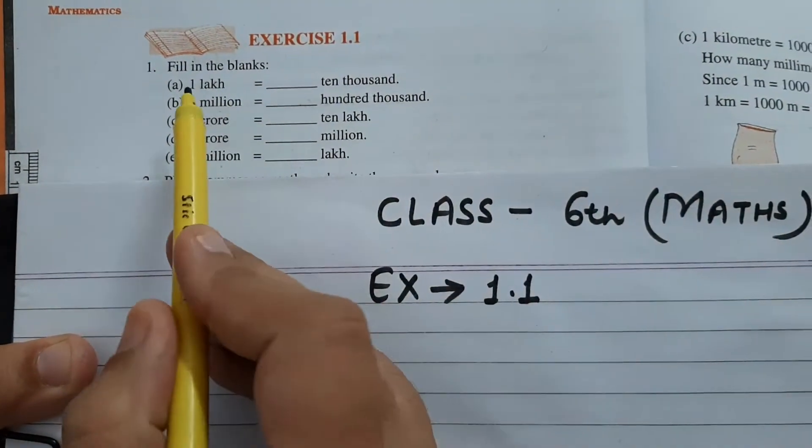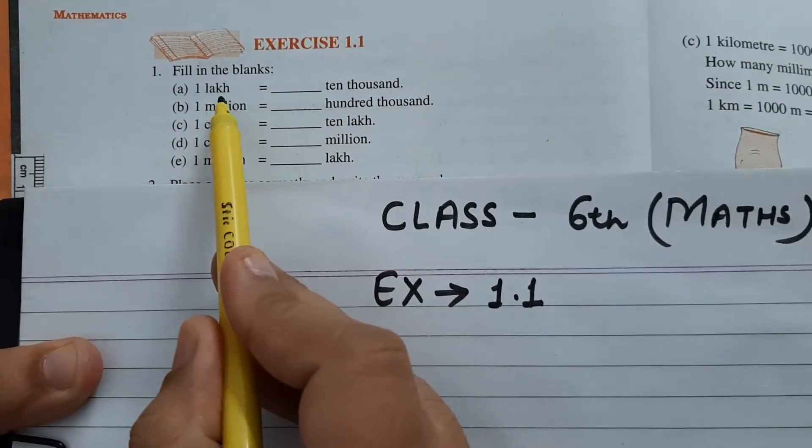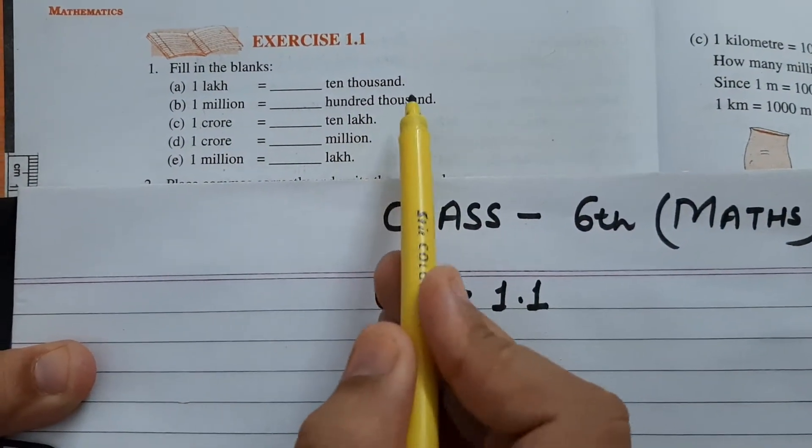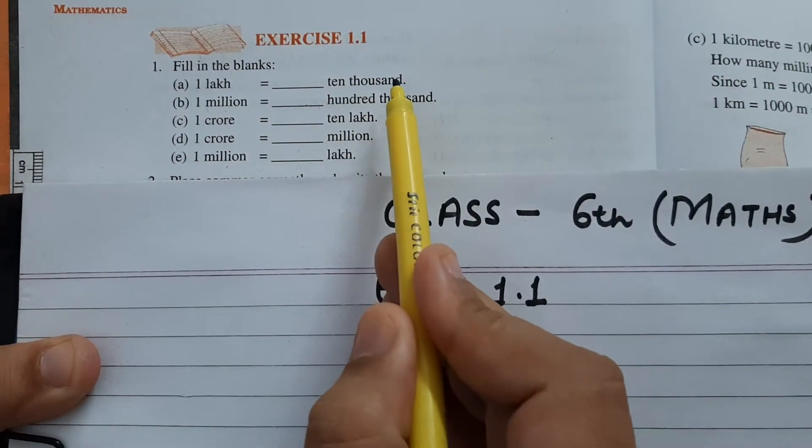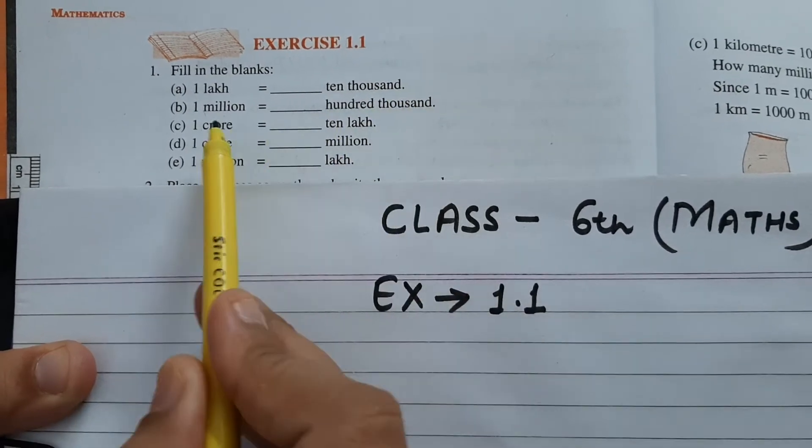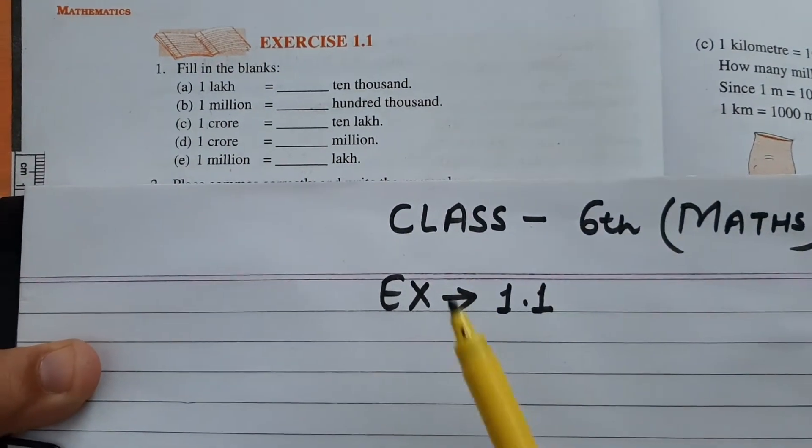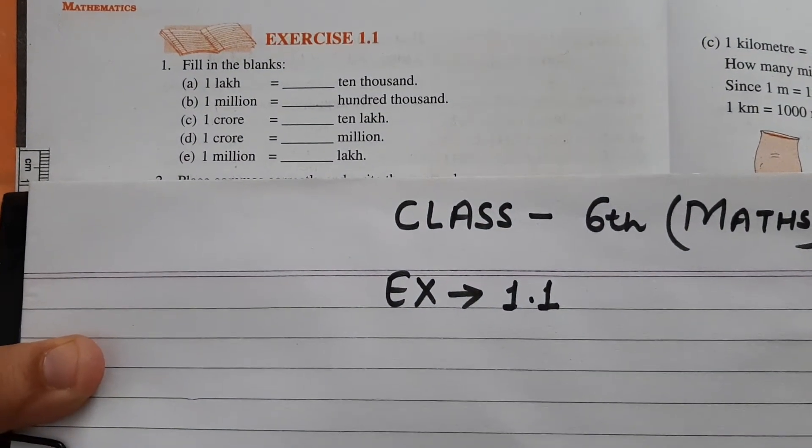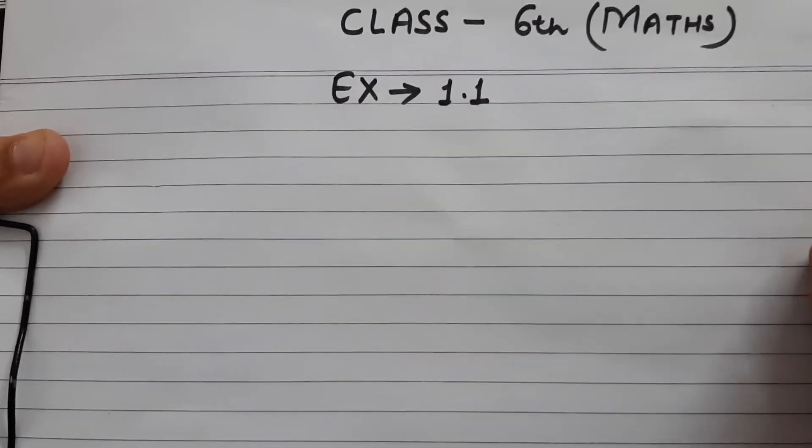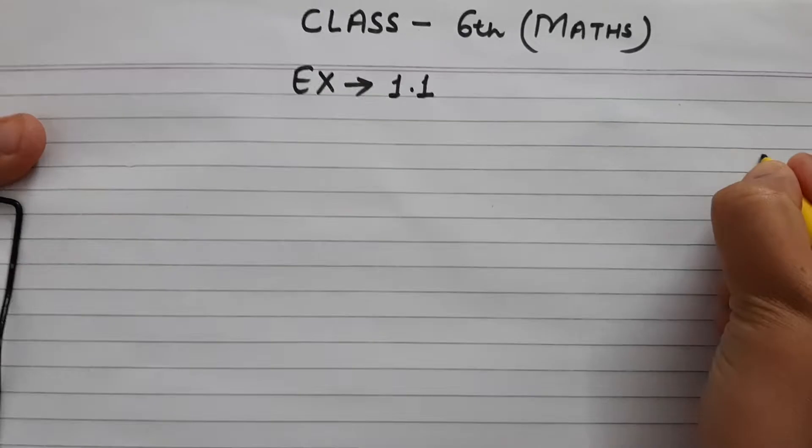Let's see, fill in the blanks. You are seeing lakh, ten thousand, million, hundred thousand. Here we have Indian place value system and international place value system. So for this reason, I have to write both systems first. First of all, I will write Indian system once.